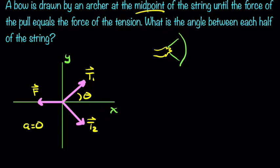So let's write out the components of our vectors. First, we have F vector, the pulling force, which in the X direction we have a negative magnitude of F, and in the Y direction we have nothing.